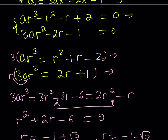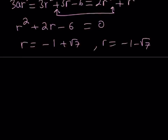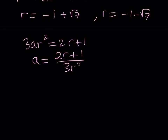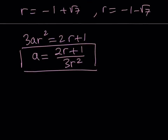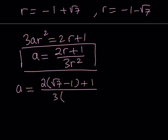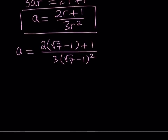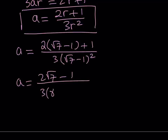I can find a because we have an equation that relates a and r. The second equation gave me 3a r squared equals 2r plus 1. From here if I isolate a, I get 2r plus 1 divided by 3r squared. So I can write a in terms of r, and I know the values of r so I can just plug in and find the values. Let me find one — the other will be very similar. For the first r value, we write: 2 times (root 7 minus 1) plus 1 divided by 3 times (root 7 minus 1) squared. This simplifies to give numerator 2 root 7 minus 1 and denominator 8 minus 2 root 7.